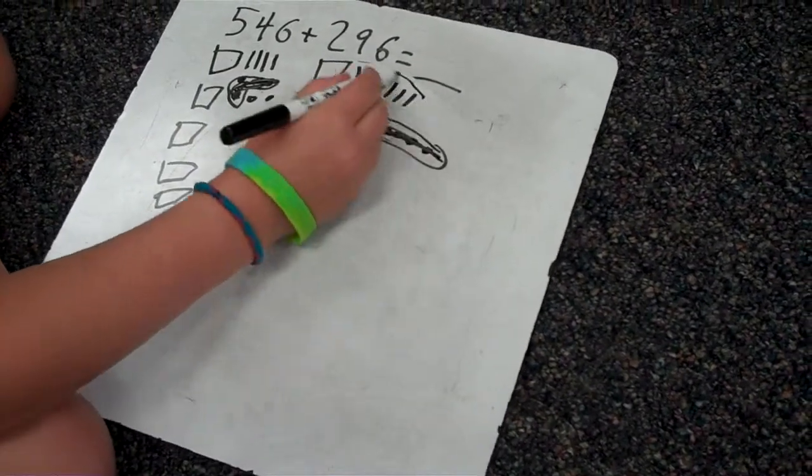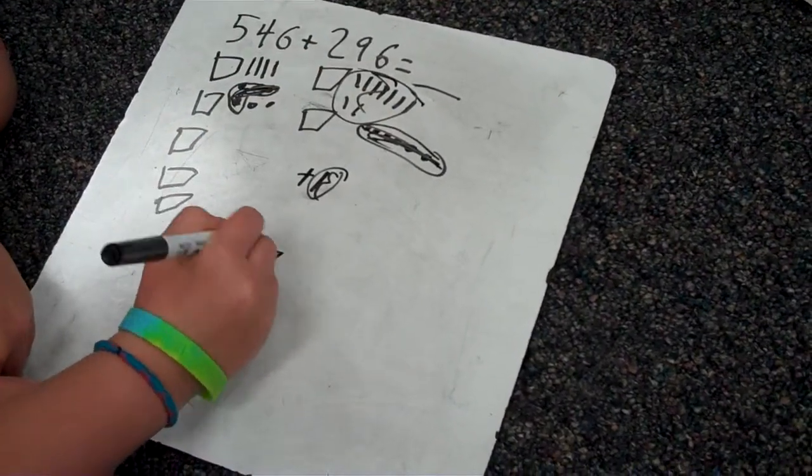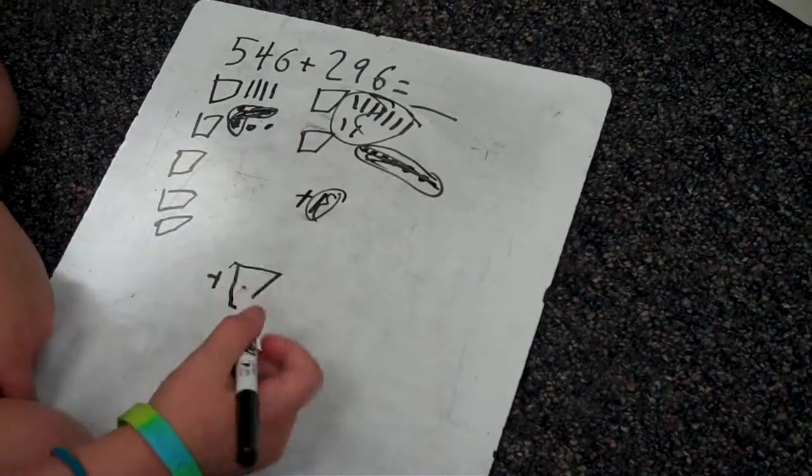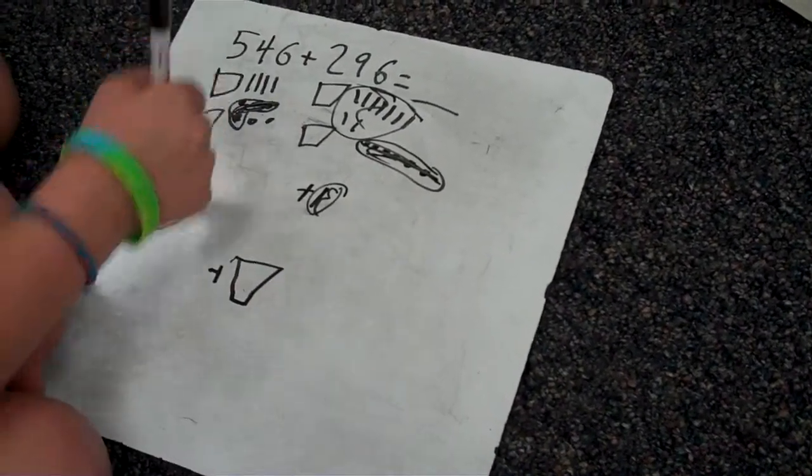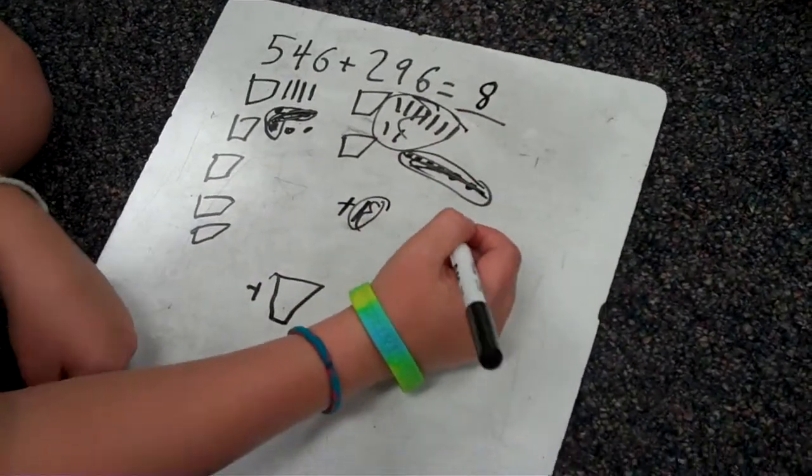So then that's 9, 10, and you cross it out and you put a square. Five, six, seven, eight. That's 842. That's perfect.